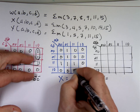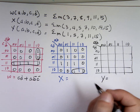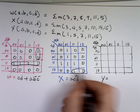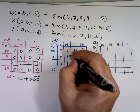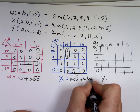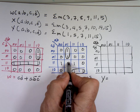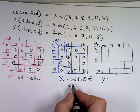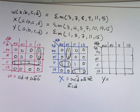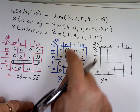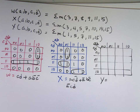For X: these two group to give ACD̄. These two — the only way to group them — give ĀBC̄. The only way to group this other one is ĀCD. Now I'm going to wait on one of the remaining groupings, because I might be able to get a match and use the same gate. I'll come back to that one.